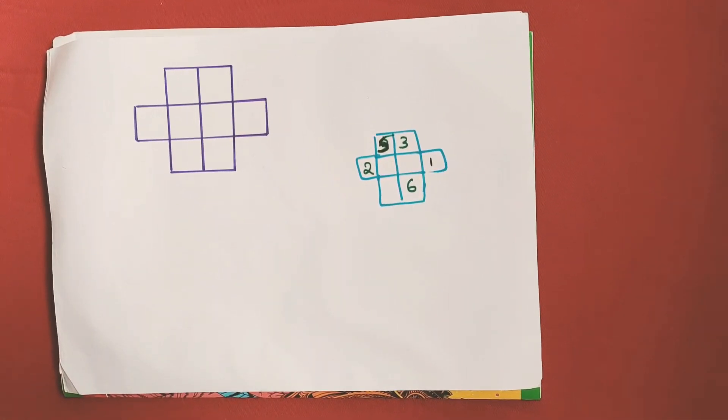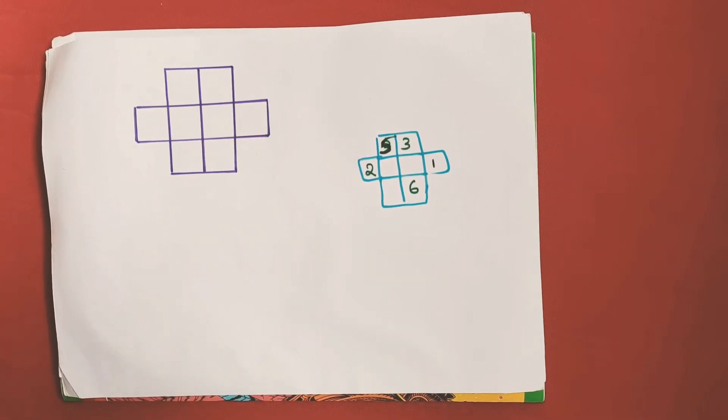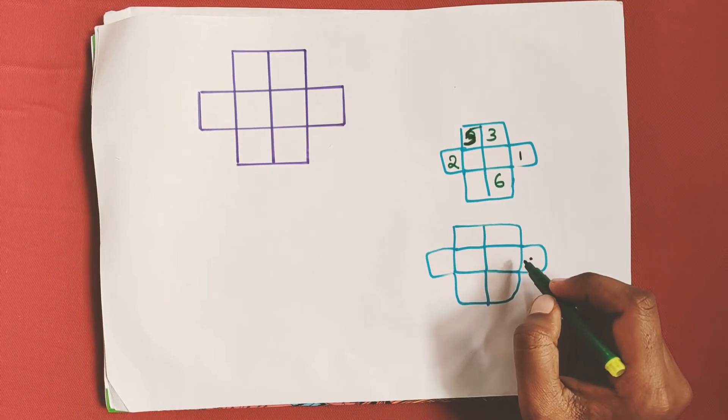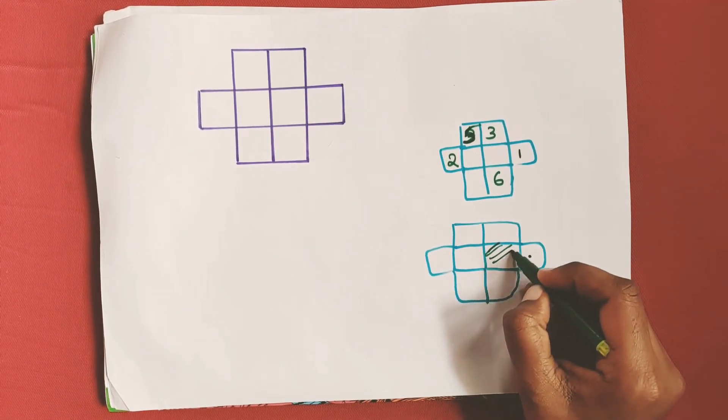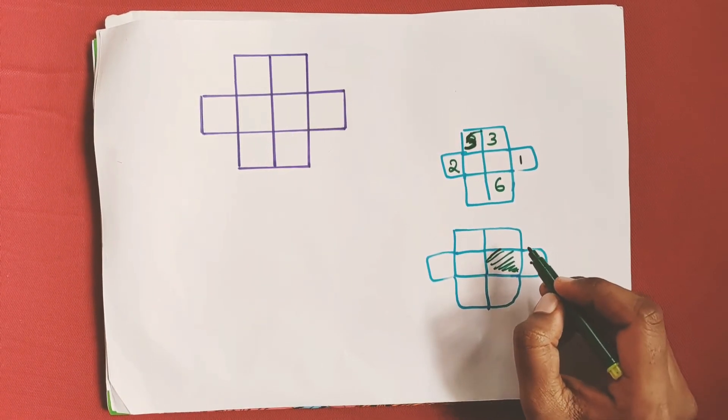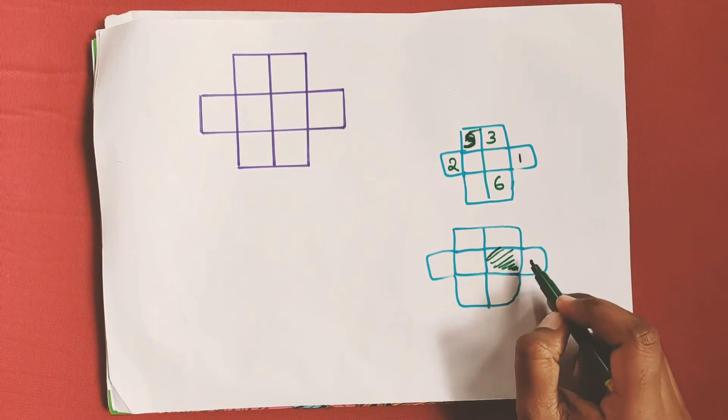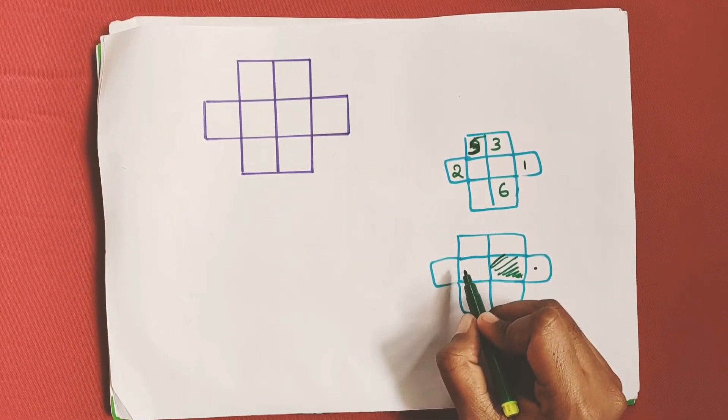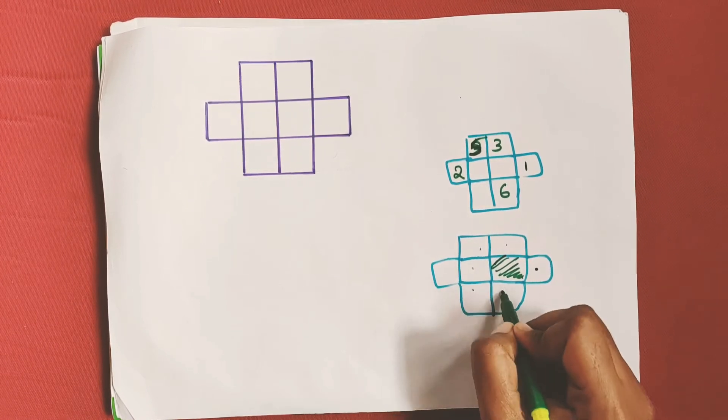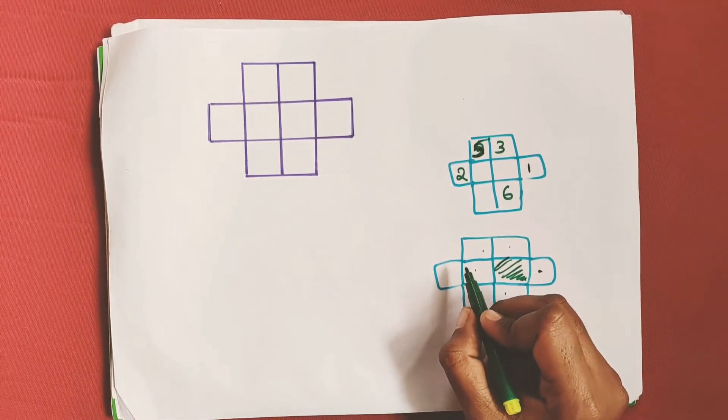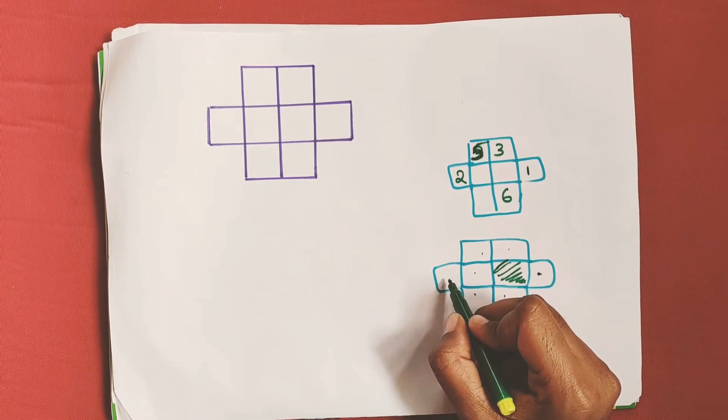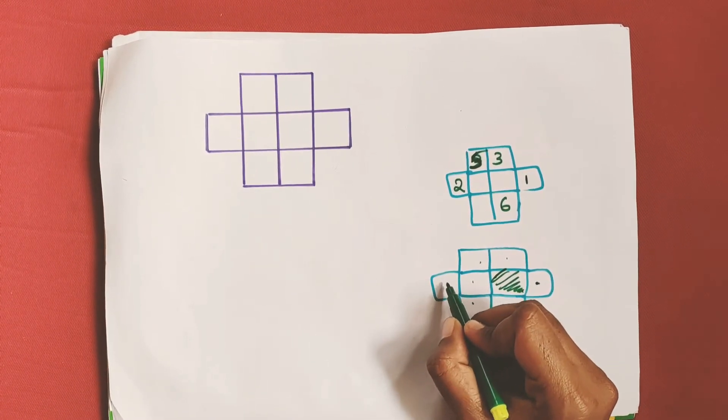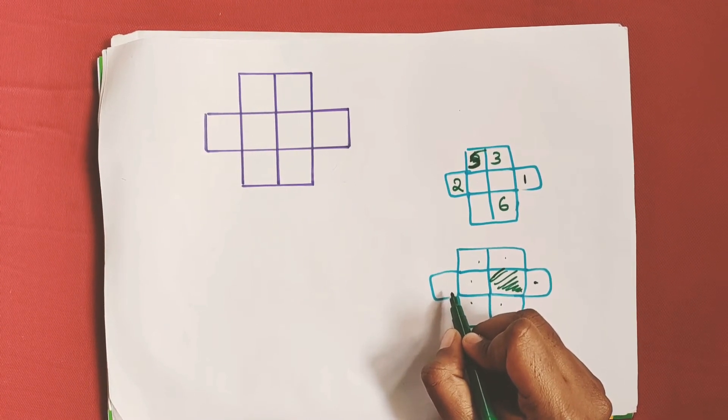When you solve it or give up, resume the video. Let me tell you the trick. Suppose if I put a number here, all of these squares should be excluded. Therefore only this box remains where I can place the adjacent number.